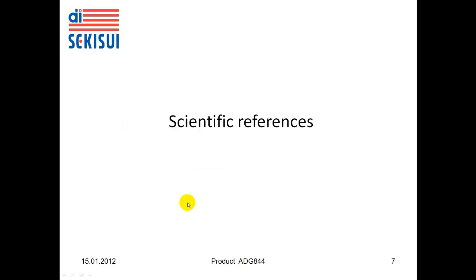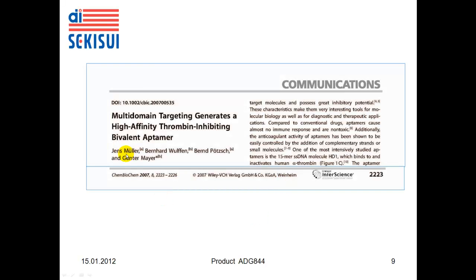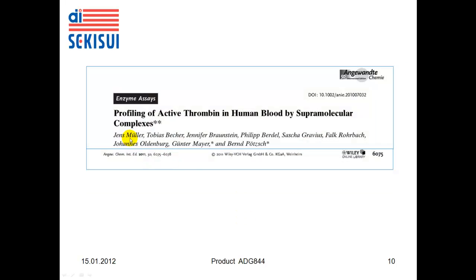A few words about the scientific references underlying this development. First, there is a publication by Jens Müller in the Journal of Thrombosis and Hemostasis in 2008, which describes the aptamer used in the assay — it binds specifically without blocking the active site. A publication also by Jens Müller in 2007 describes the assay principle, and a more recent publication by Jens Müller in 2011 describes the use of this assay principle in human samples.